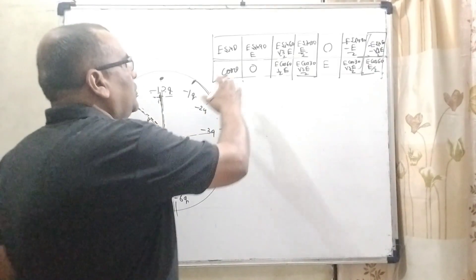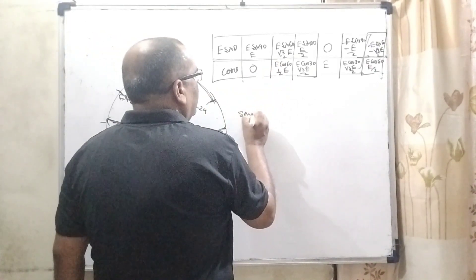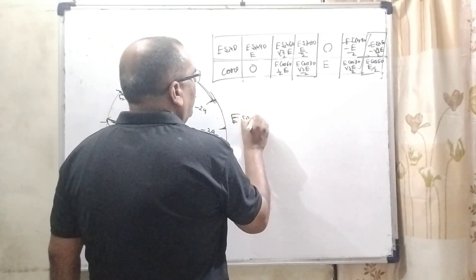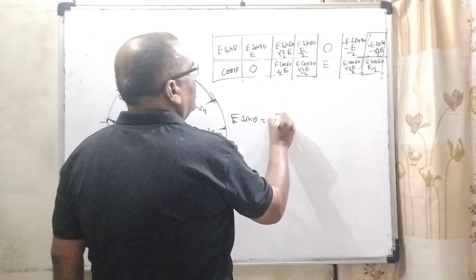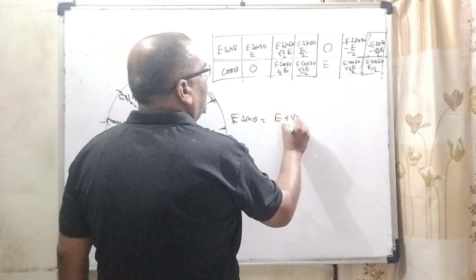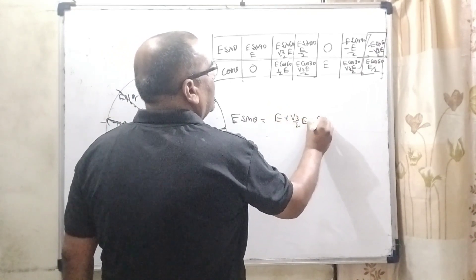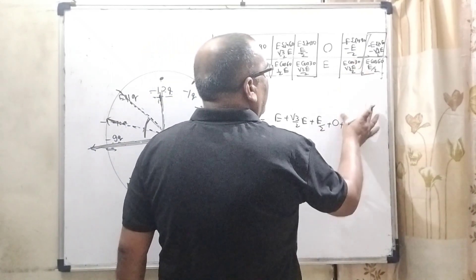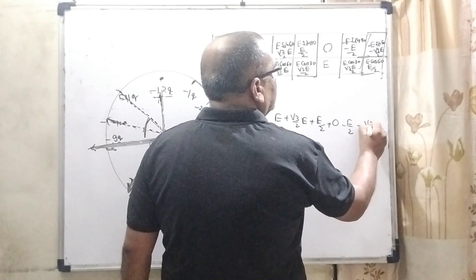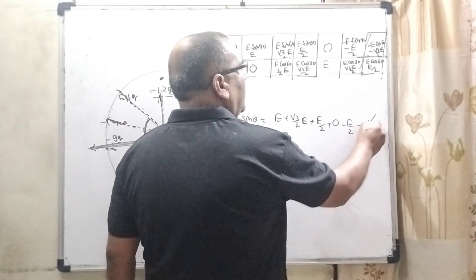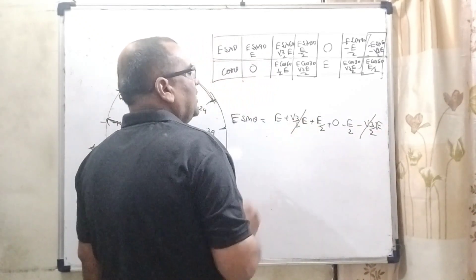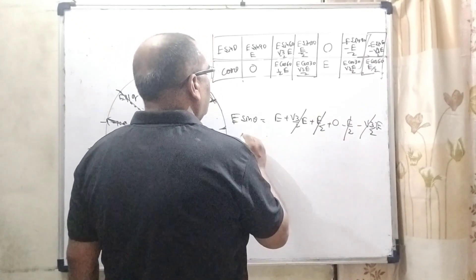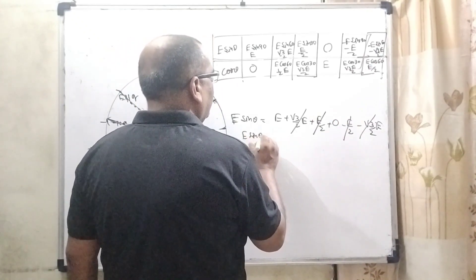Now compute all these values of sine theta, sine component. E sine component. E plus root 3 by 2 E plus E by 2 plus 0 minus E by 2 minus root 3 by 2 E. This minus root 3 by 2 E cancel out. Here E by 2, E by 2 cancel out. Then E sine theta, net value is E.